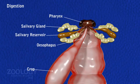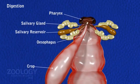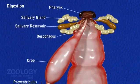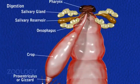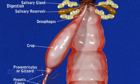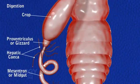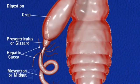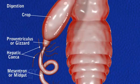Food now starts moving through the alimentary canal by peristalsis. Most of digestion occurs in the crop by saliva and digestive secretions of the hepatic caeca and midgut.